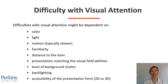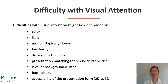Presentation matching the visual field abilities — visual attention is better in the stronger visual field. Level of background clutter — less cluttered environments will help with visual attention. Backlighting, either using a tablet or APH lightbox, will help with visual attention. Accessibility of the presentation form — two-dimensional versus three-dimensional presentations. Some individuals might not have visual access to two-dimensional images, so it should be taken into consideration.